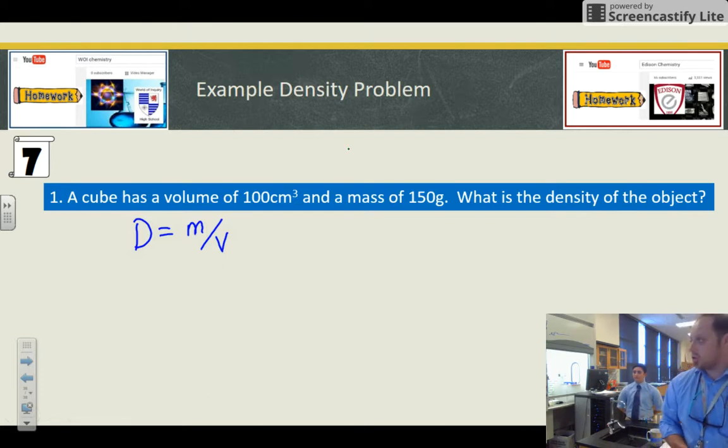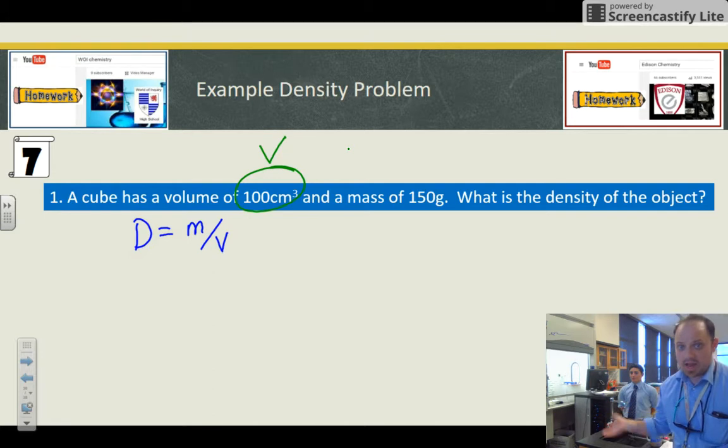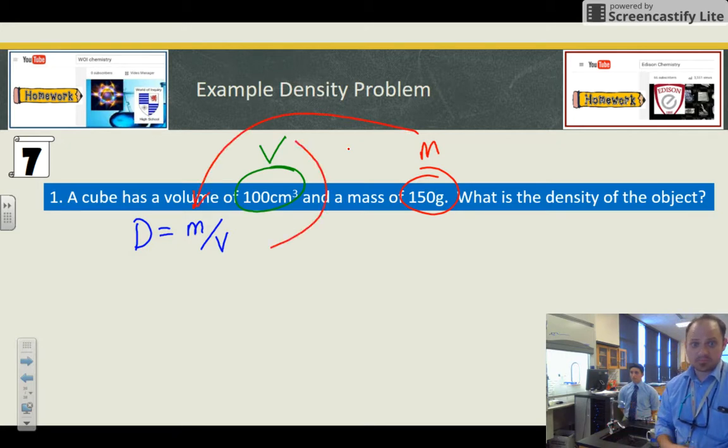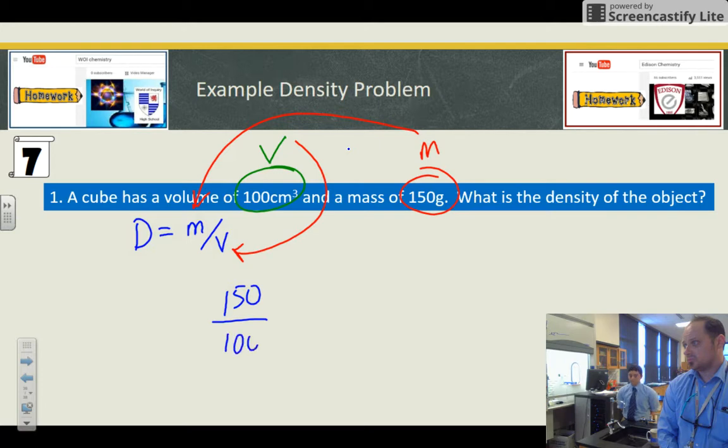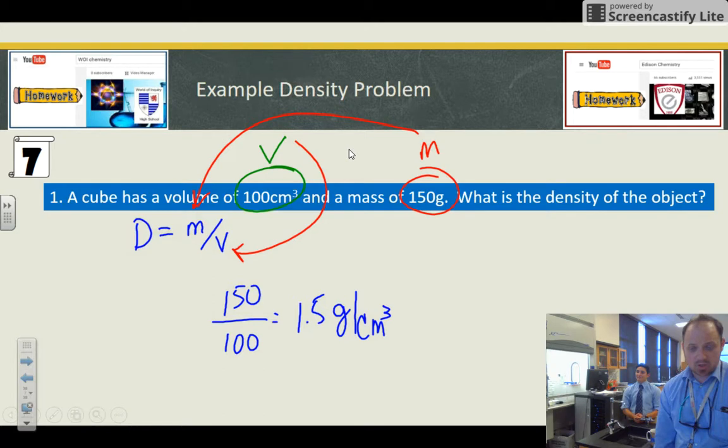Grams per centimeters cubed would be our final unit. So the density says cube's got a volume 100 centimeters cubed, so that's a volume and a mass of 150 grams. So that's there right here, mass. What is the density? And this is the plug and chug piece. So D equals, I got to do 150 over 100. I can do this in my head. That's going to be 1.5 grams per centimeter cubed. That would be the answer.